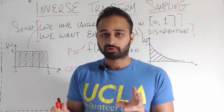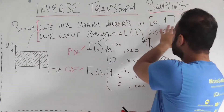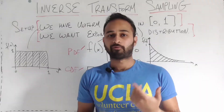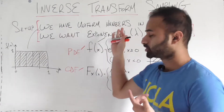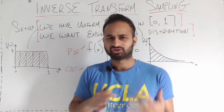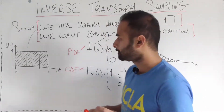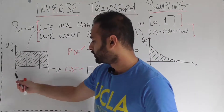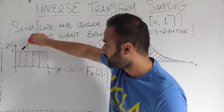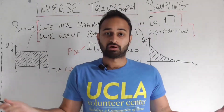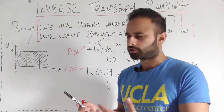Here is the setup. Let's say we have uniform numbers in the interval zero through one. A uniform distribution means any real number in that range has an equal probability of being chosen. We'll assume we have this distribution for free. Here is the probability density function of numbers from zero to one — every number in the range has an equal chance of being selected, so the density is the same across the board.